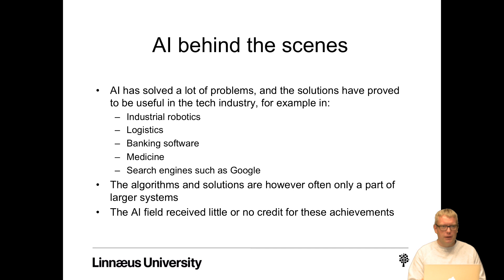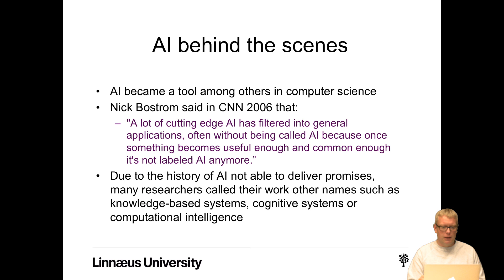AI solved a lot of problems useful in the tech industry — industrial robots, logistics, banking software, medicine, search engines like Google. But these algorithms are often only part of larger systems, and the AI field received little or no credit for these achievements, becoming a tool among others in computer science. As Nick Bostrom noted in CNN in 2006: a lot of cutting-edge AI has filtered into general applications, often without being called AI — because once something becomes useful enough and common enough, it is no longer labeled AI anymore.